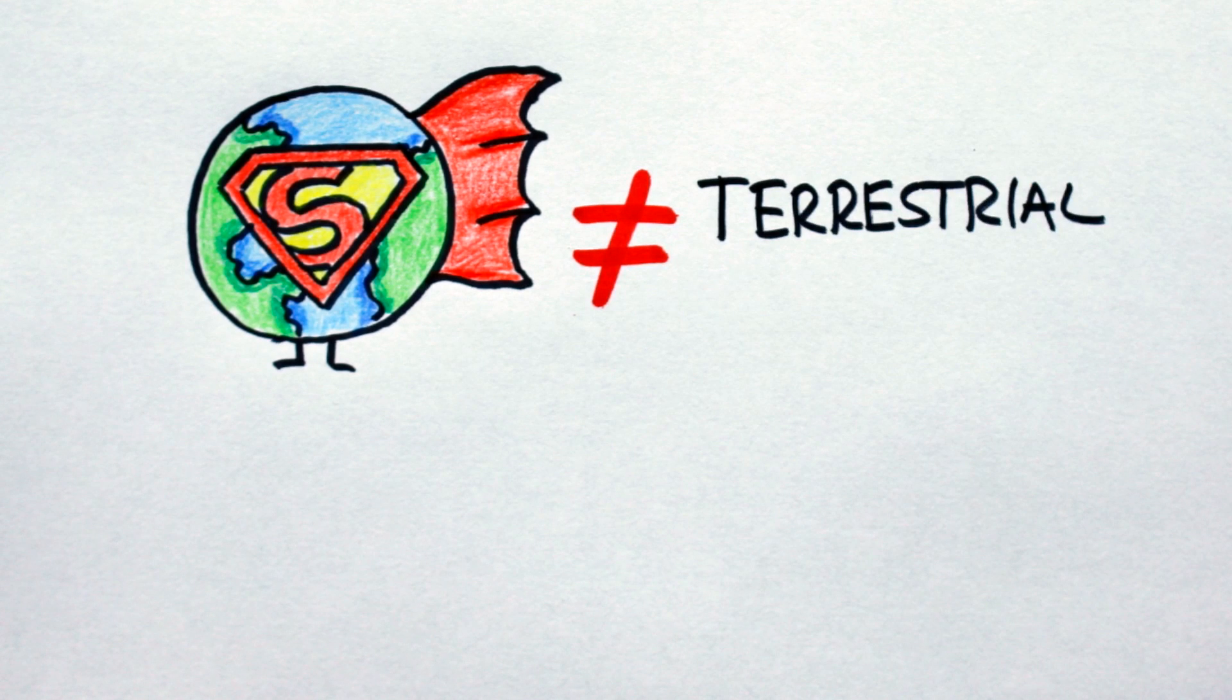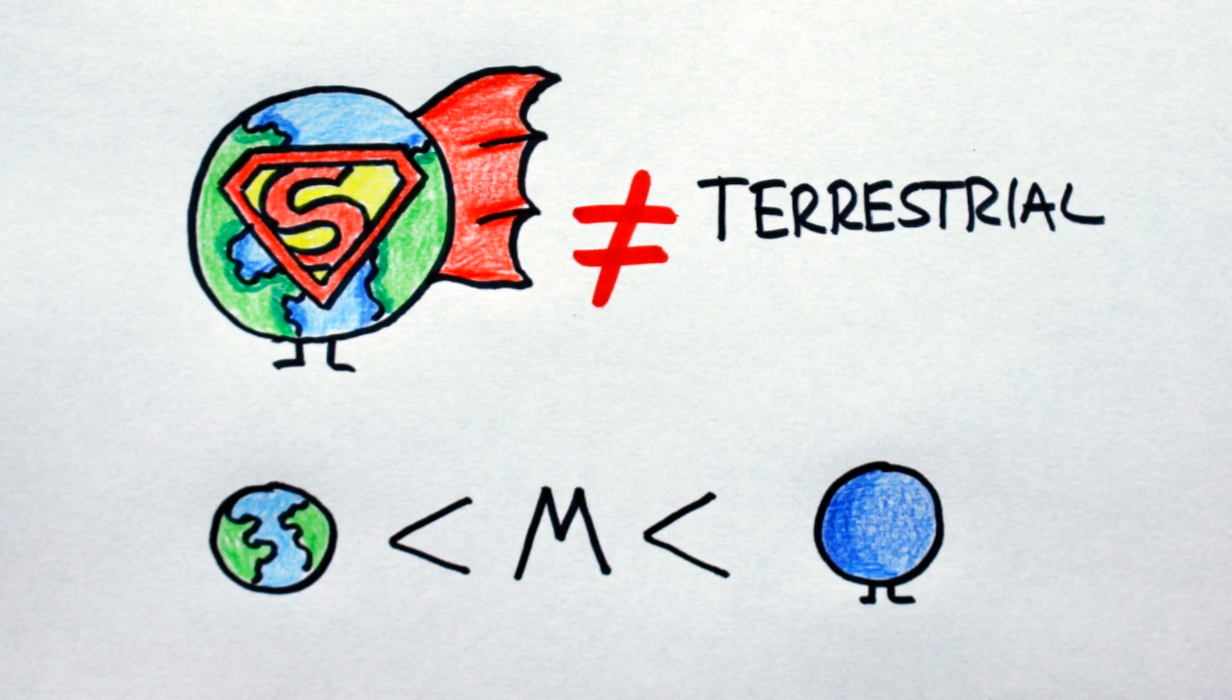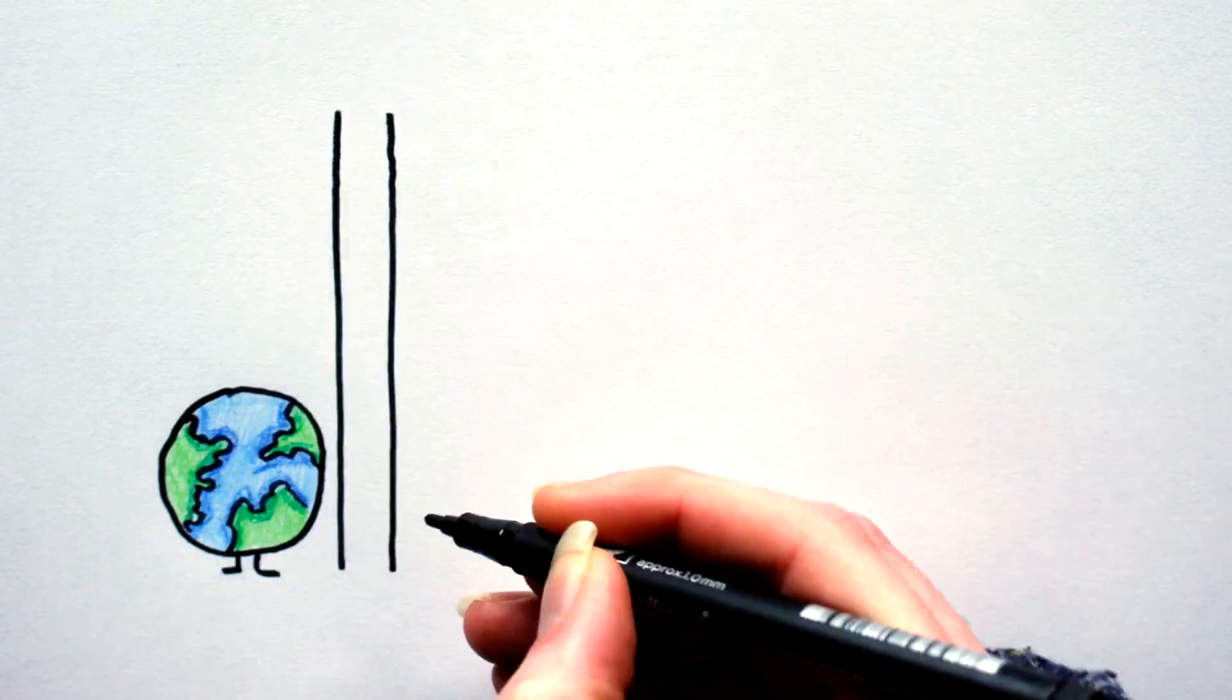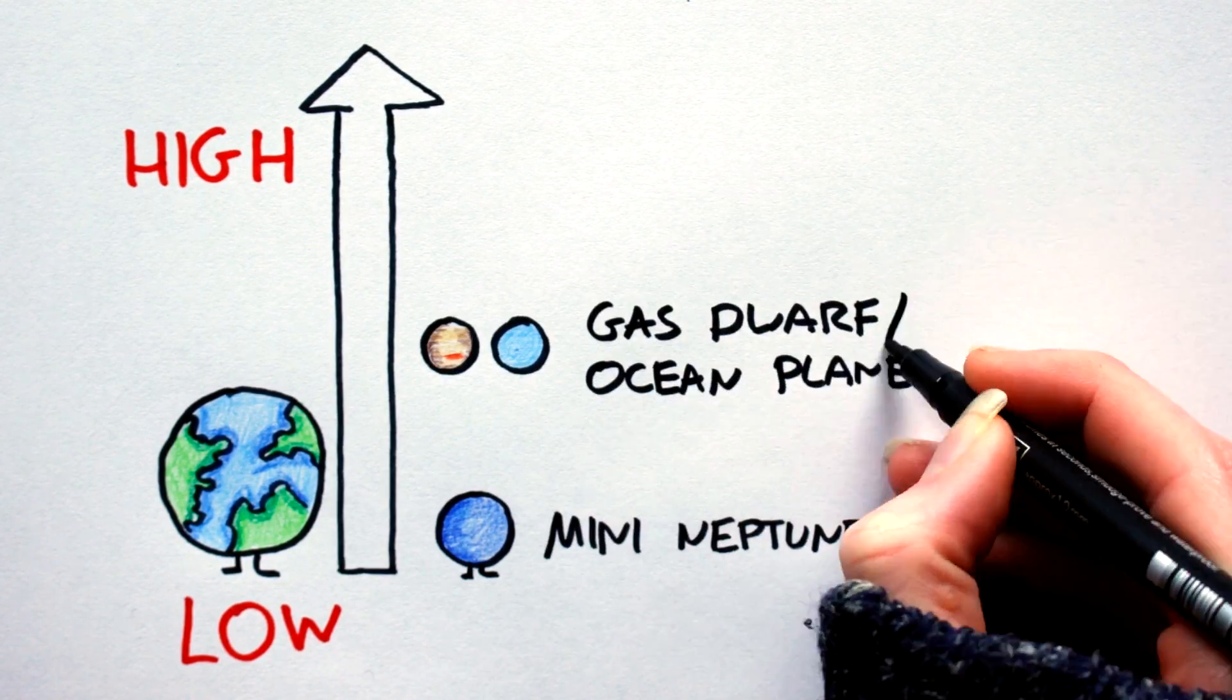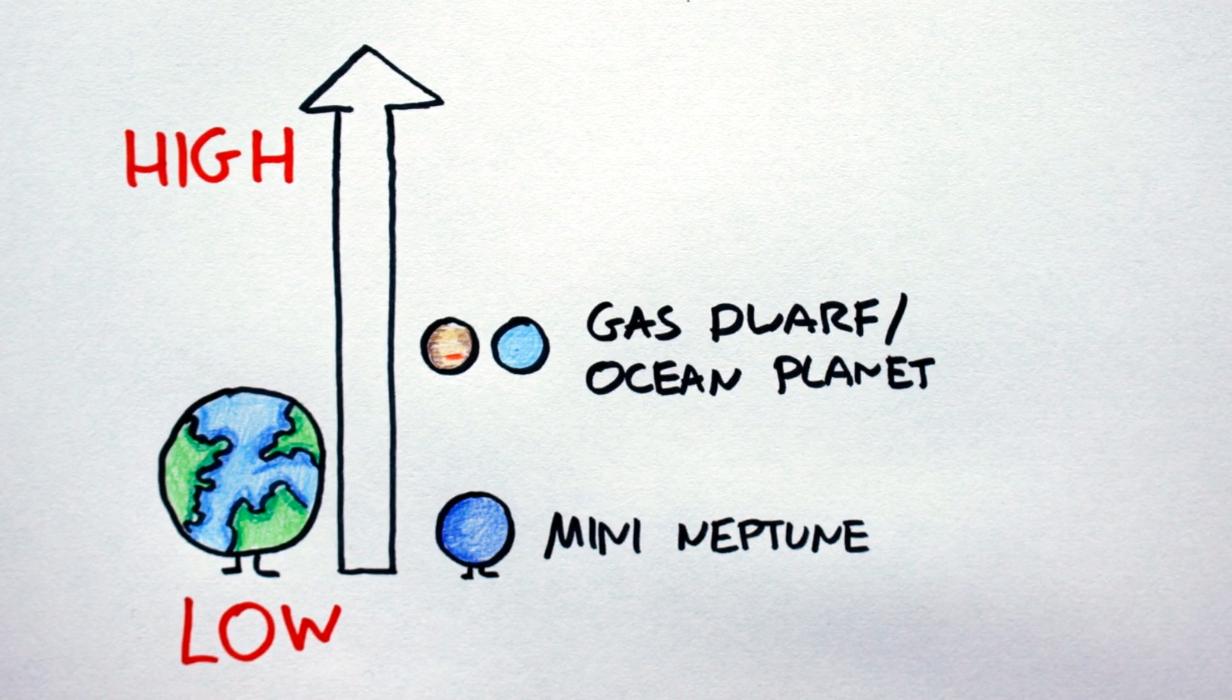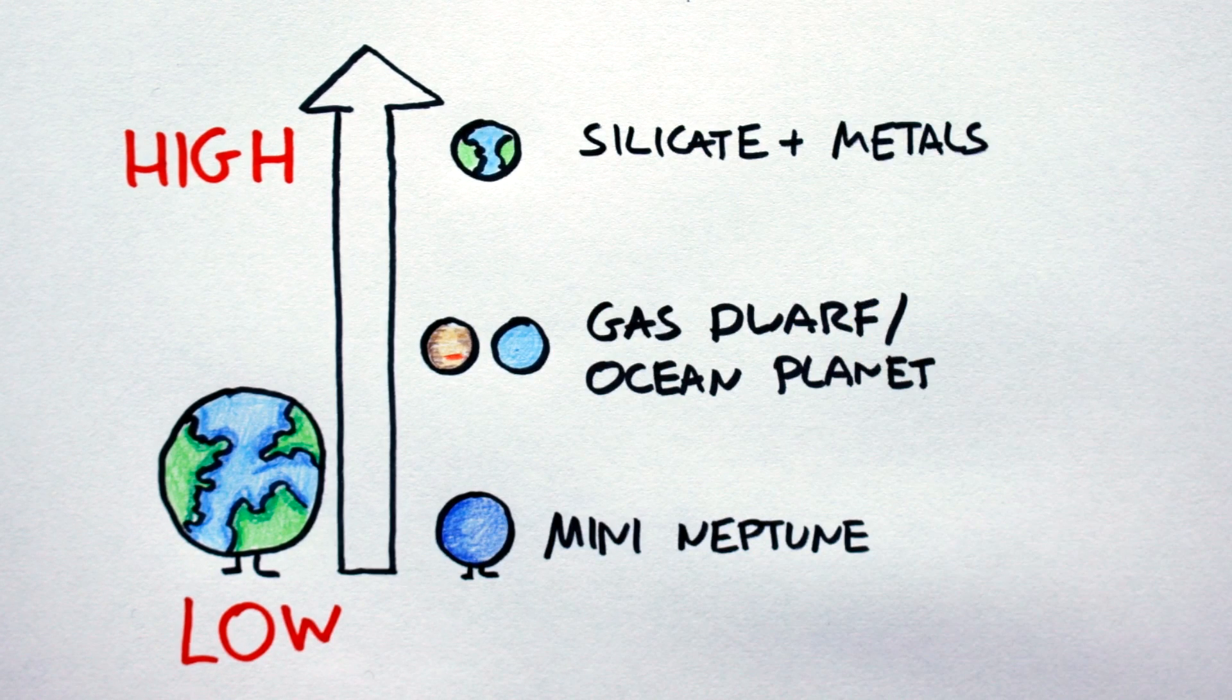Super-Earths are defined as being planets whose mass is greater than Earth's but less than Uranus and Neptune's. This definition is based solely on mass, no other parameters. So then, paradoxically, low-density super-Earths will be gaseous. Intermediate-density super-Earths will either be gaseous or water worlds, depending on certain variables. And only high-density super-Earths will actually be rocky terrestrial planets.